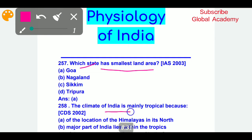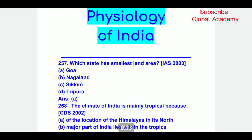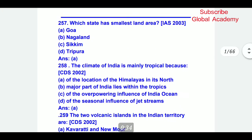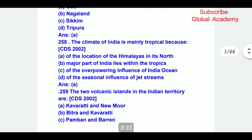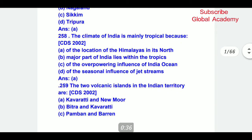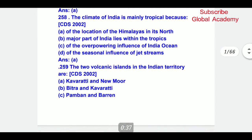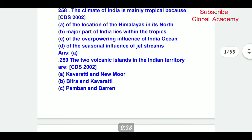The climate of India is mainly tropical because of the location of the Himalayas in its north. This is the correct answer.